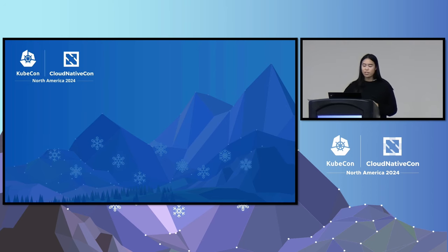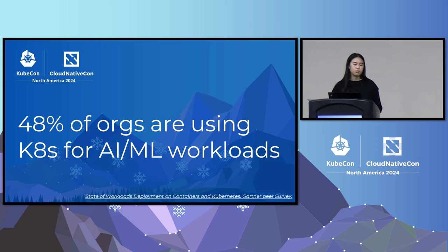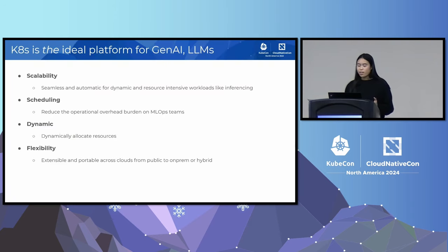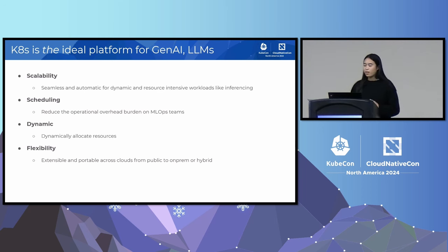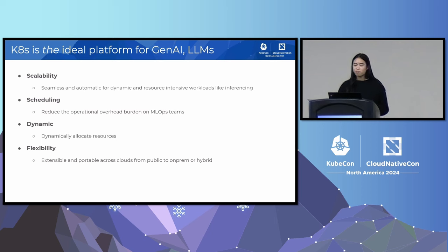Before we talk about the strategies, let's look at some data. In a recent Gartner peer survey of over 500 tech leaders, they found that over 48% of organizations are actually using Kubernetes to run their AI/ML workloads. For AI and LLMs, Kubernetes really is the ideal platform. Kubernetes provides scalability and elasticity — the ability to scale up and down automatically based on resource demand is a huge advantage, especially for training or apps that require massive amounts of compute.